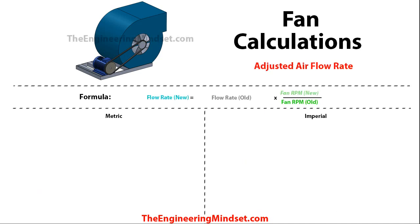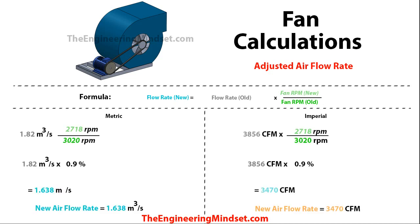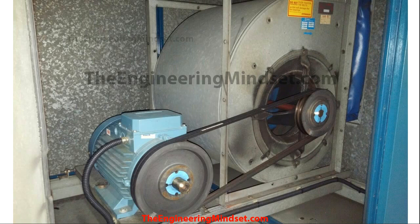If you've made changes to the fans and motors, you'll want to know the adjusted airflow rate and whether it satisfies the design criteria or achieves energy savings. The formula is: new airflow rate = old airflow rate × (new fan RPM ÷ old fan RPM). Plugging in the figures — the RPMs form a ratio — and multiplying out gives 1.638 m³/s (3470 cubic feet per minute).